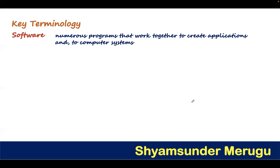Software — the basic meaning of software is that which is easily modifiable or changeable. So if you write a set of instructions to do a particular task and you want to change anything later, you can easily change or modify it. So in that sense, we call it software. If we have numerous programs or complex programs together to create an application for computers, that is called software.